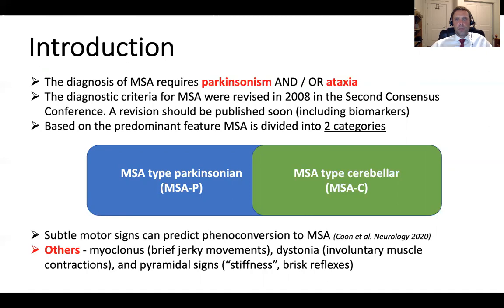We distinguish two subtypes of MSA based on the predominant motor feature. If the predominant feature is Parkinsonism, we call it MSA type P or MSA-P. If the predominant feature is cerebellar ataxia, it is MSA type C or MSA-C. In patients with pure autonomic failure, the onset of Parkinsonism and/or cerebellar ataxia may predict the risk of future phenoconversion to multiple system atrophy.